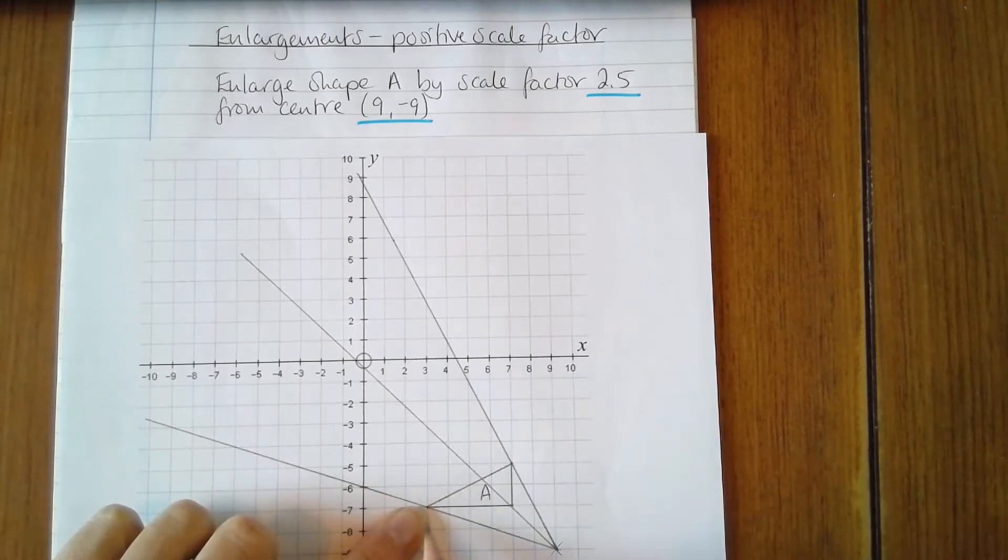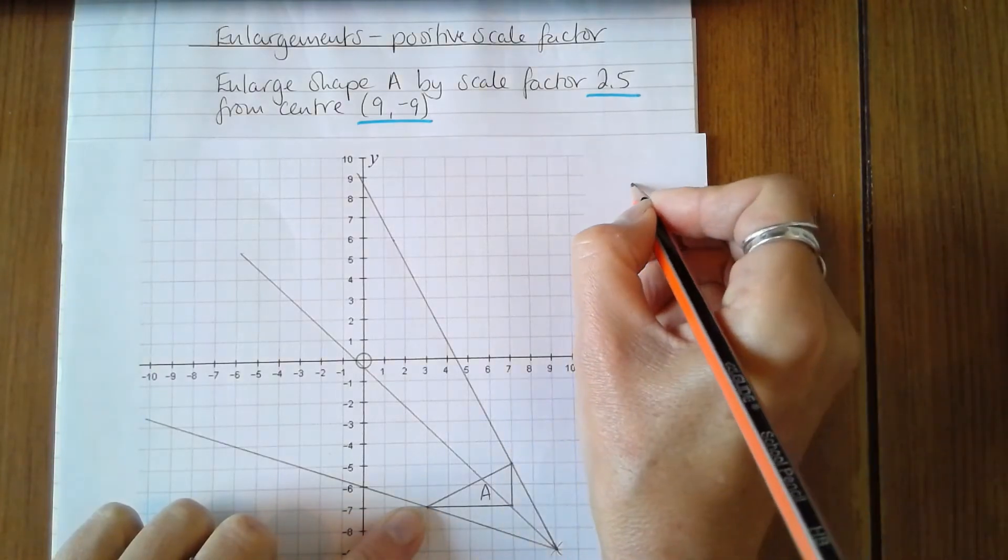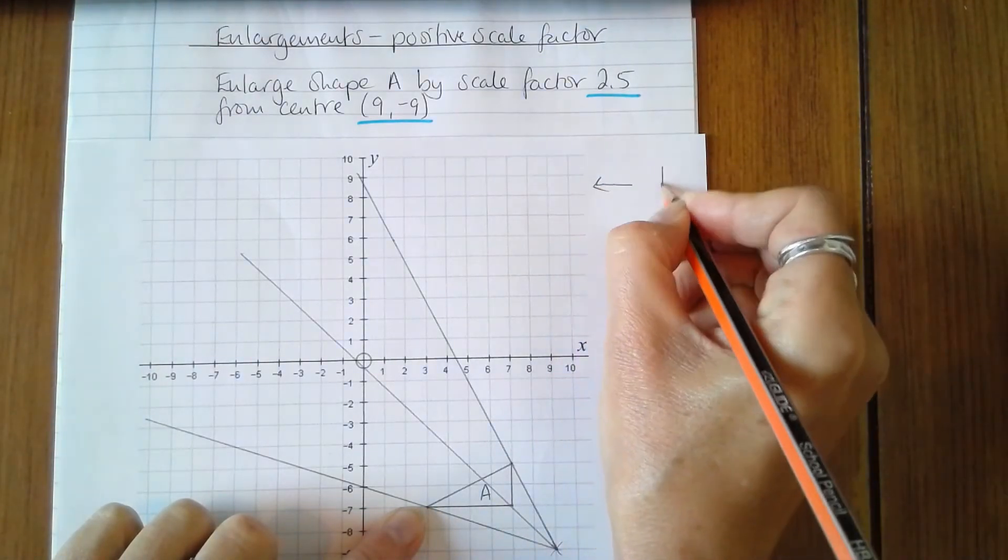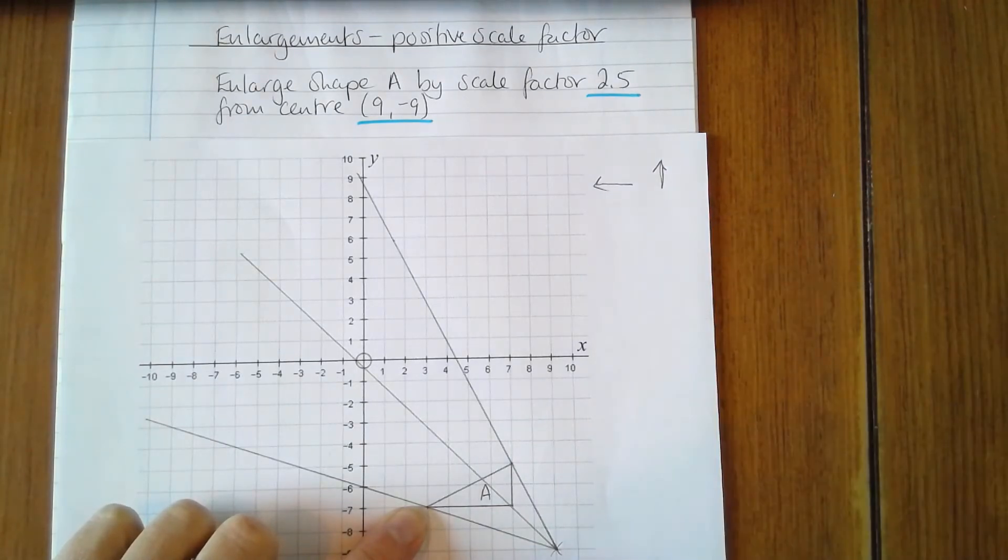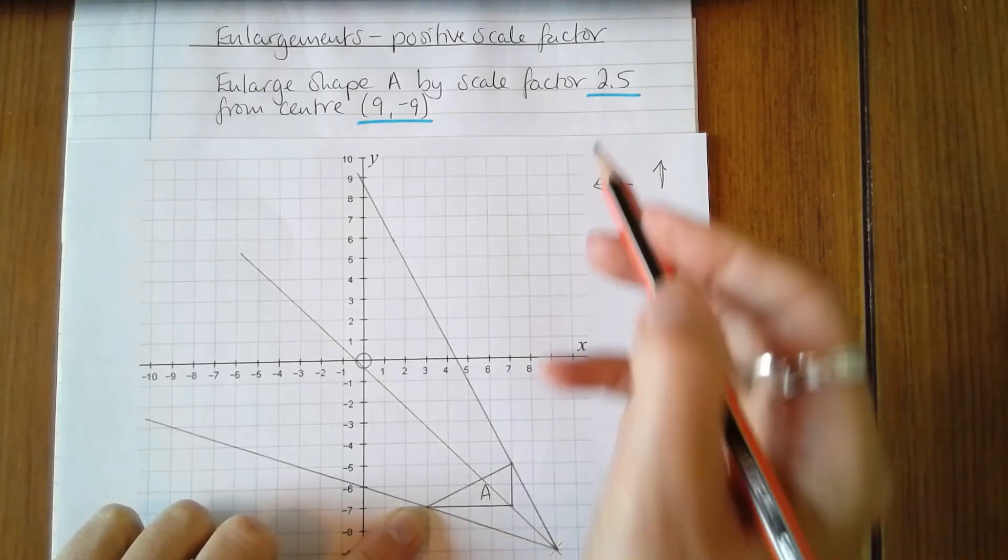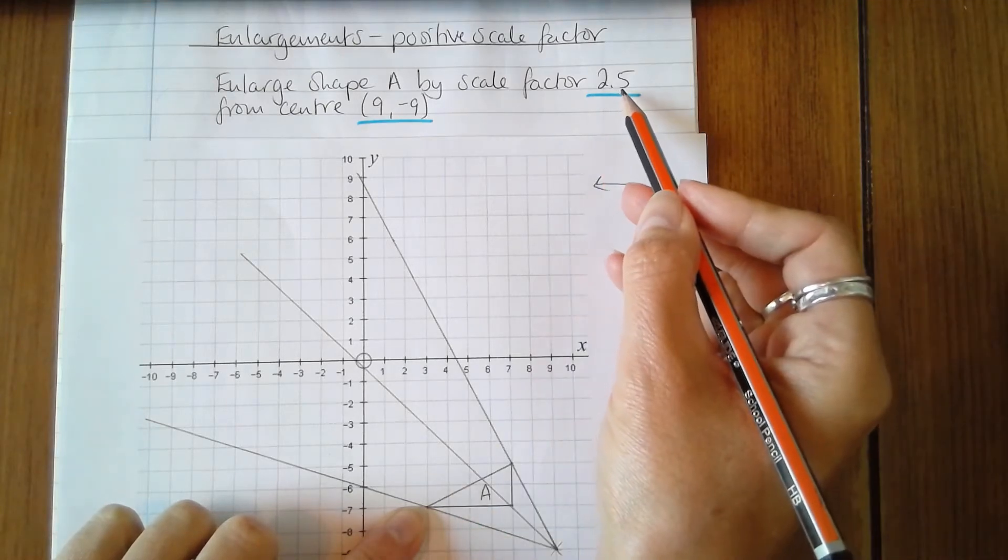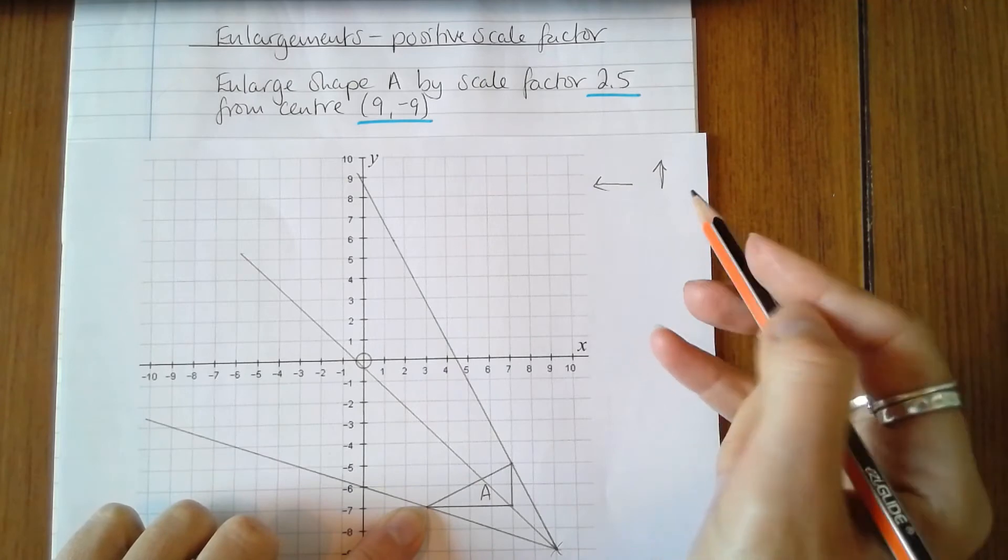This will help because when I'm counting, sometimes it's easy to forget what you've counted when you're trying to also multiply it by 2.5. So if we write those numbers down, we're less likely to make a mistake.